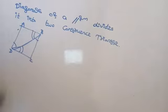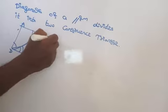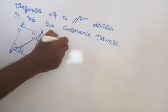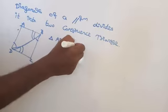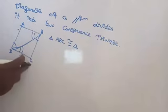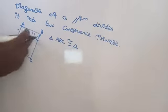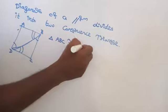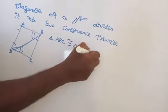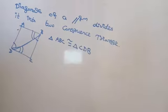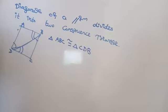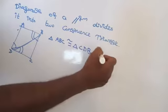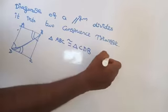Therefore, triangle ABC is congruent to triangle CDB. By which congruence rule? Side, angle, side, angle — by ASA. By ASA congruence rule.